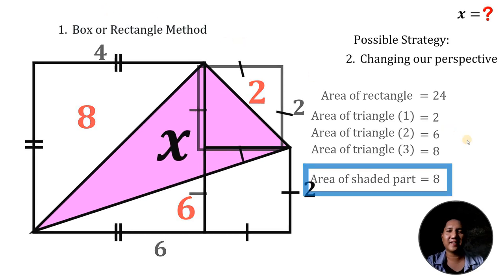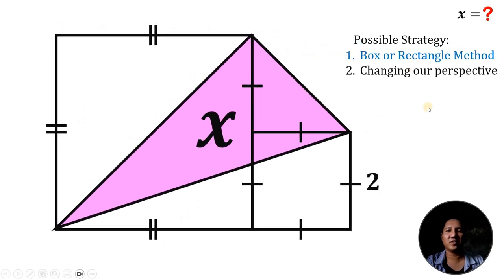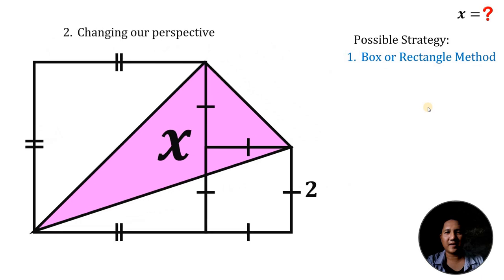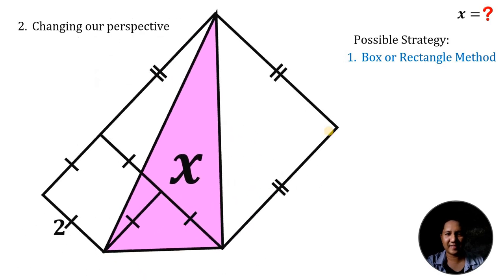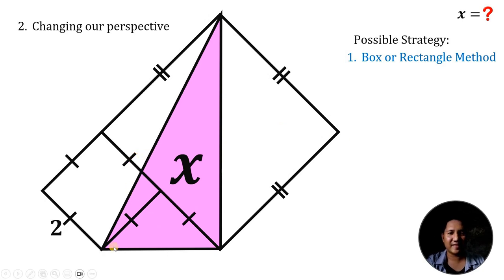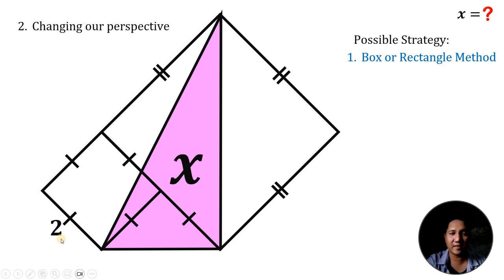Now, how about the second strategy, which is changing our perspective? This is much easier than the first strategy. What we're going to do is rotate this figure. In this case, we have a right triangle. The base of this right triangle is the diagonal of the square having a side length of 2. The length of the diagonal equals the side length multiplied by √2, so the base measures 2√2.